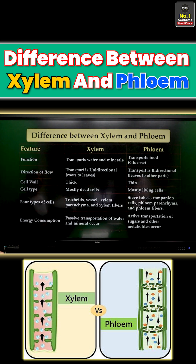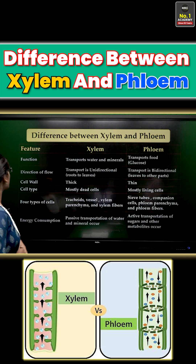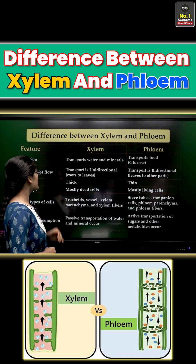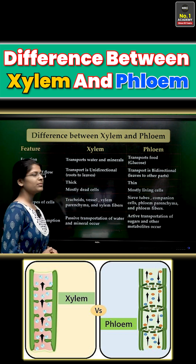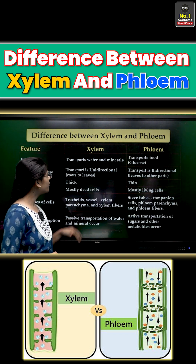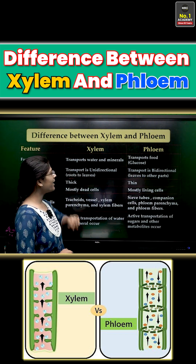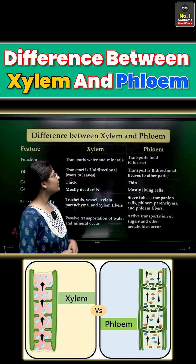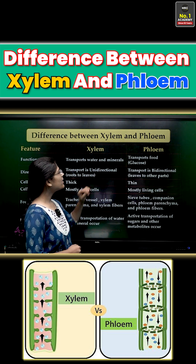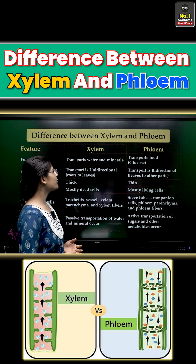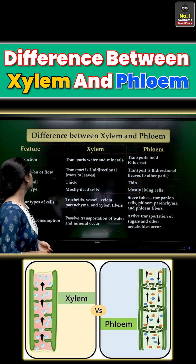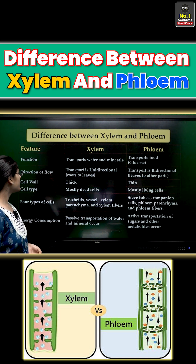The first point is function. Xylem transports water and minerals, but phloem transports food.